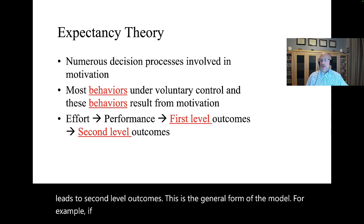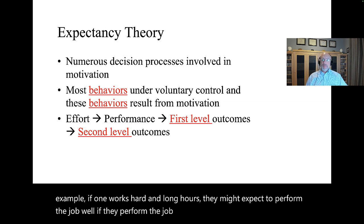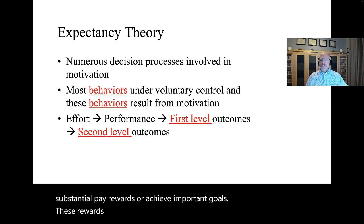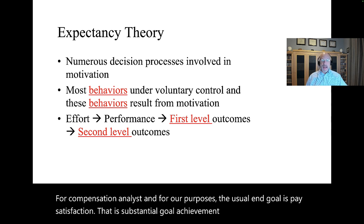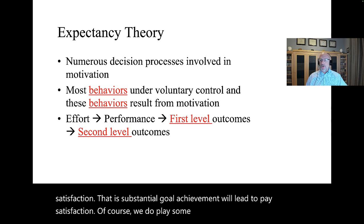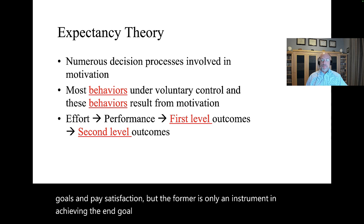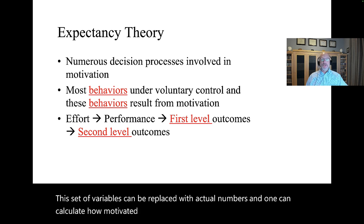For example, if one works hard and long hours, they might expect to perform the job well. If they perform the job well, they might expect to earn substantial pay rewards or achieve important goals. These rewards or goals are instrumental in the achievement of the end or terminal goal. For compensation analysts, the usual end goal is pay satisfaction — substantial goal achievement will lead to pay satisfaction. We do place some valence or value on both achieved goals and pay satisfaction. This set of variables can be replaced with actual numbers, and one can calculate how motivated they are to pursue second-level outcomes.